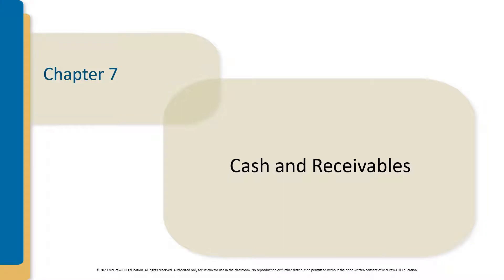We're now going to look at Chapter 7, which is broken into two parts because it's so long. The first half focuses on cash and accounts receivables, and the second part will focus on notes receivables, sale of receivables, and some unique activities that could happen with receivables.